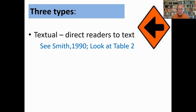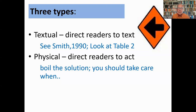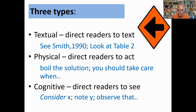Directives direct readers to three main kinds of activity: textual acts direct readers to another part of the text or another text altogether — 'see Smith', 'look at table two'; physical acts direct readers how to carry out some action in the real world, often found in method sections; and cognitive acts instruct readers how to interpret an argument, explicitly positioning them. These directives are not only more frequent in science texts but function differently.